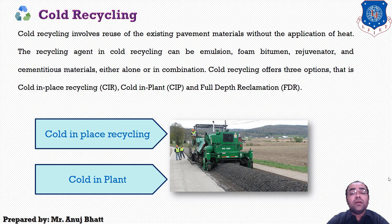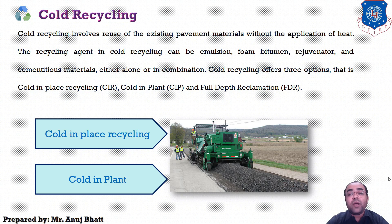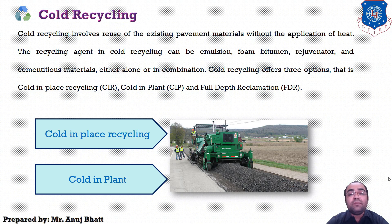In cold in-plant recycling, the reclaimed bituminous material (RBM) is transported to a mobile cold mixing plant located in the vicinity of the job. Measured quantities of RBM and fresh aggregates are cold-fed into a twin-shaft pugmill, and metered quantities of binder — either in the form of bitumen emulsion or foam bitumen — are injected. All the ingredients are mixed and blended for a certain duration to produce a homogeneous mix, which is transported to the work site, paved, and then compacted. The requirements of cold in-plant therefore involve proper control on material feed and mixing process, including mixing time.